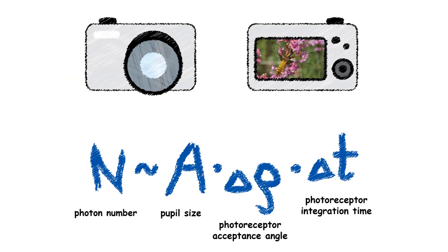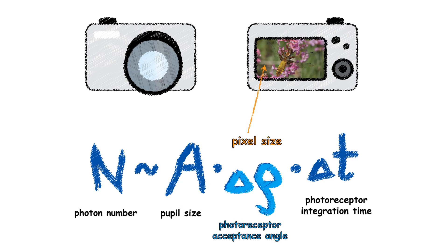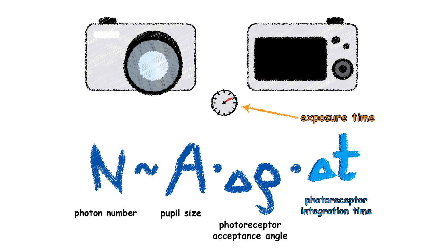You know all this from cameras. The pupil is equivalent to the lens's aperture. The photoreceptor acceptance angle is effectively equivalent to a pixel in the camera sensor. And the photoreceptor integration time is equivalent to the exposure time.